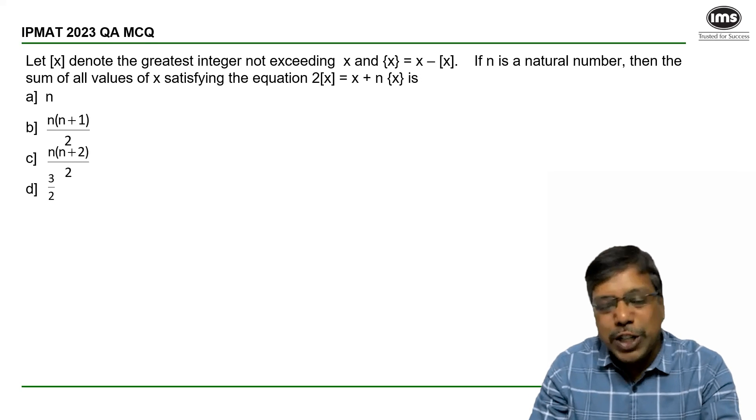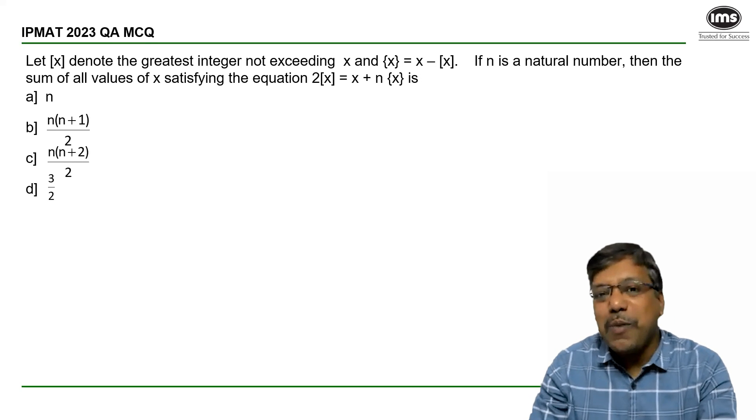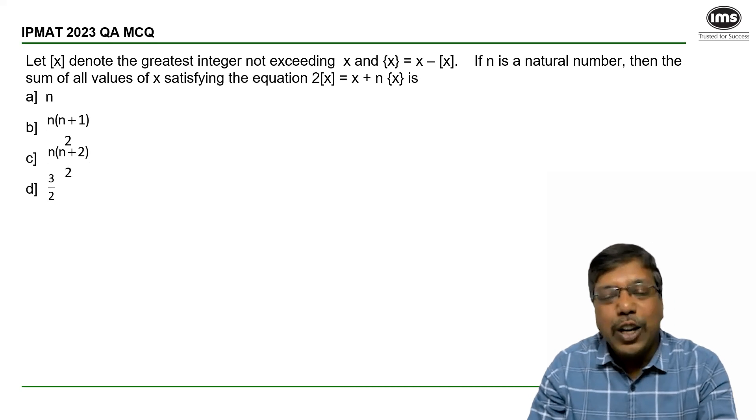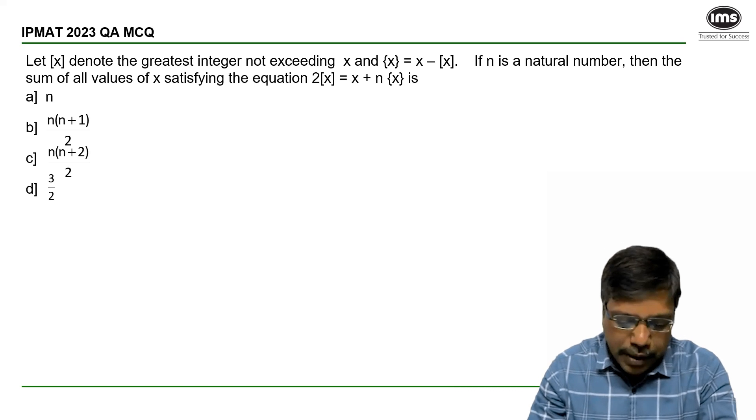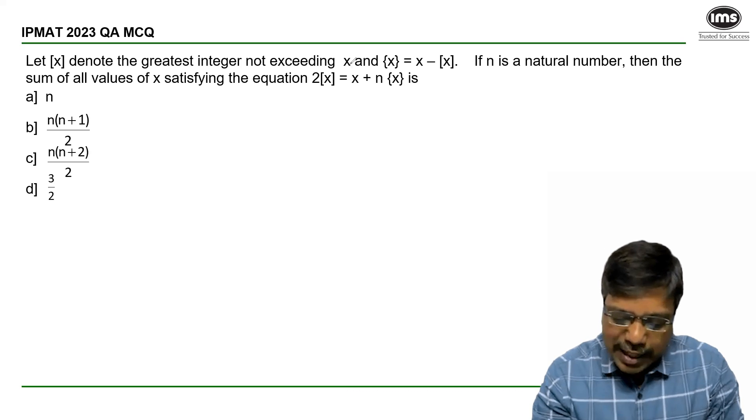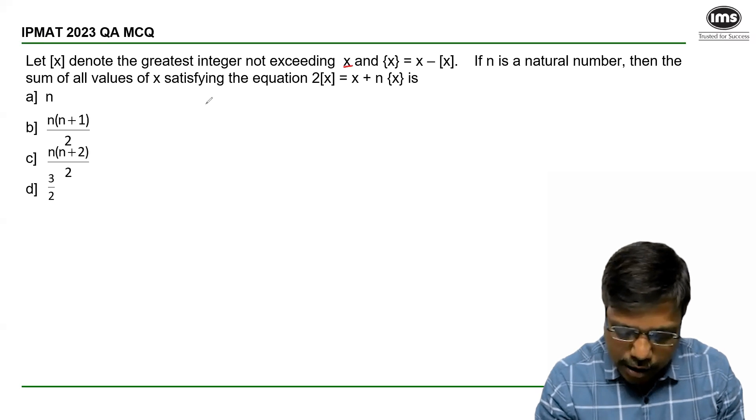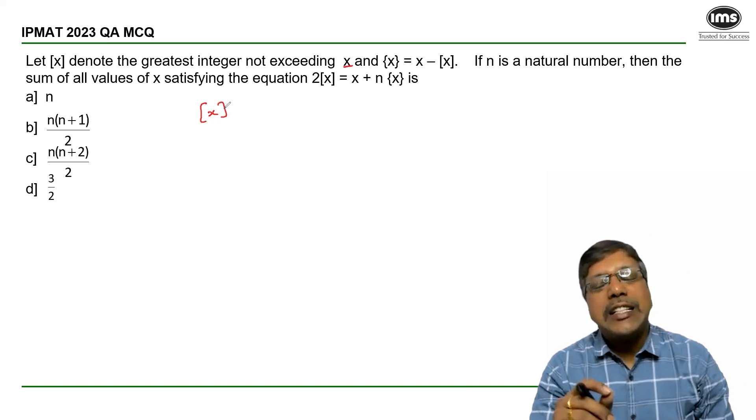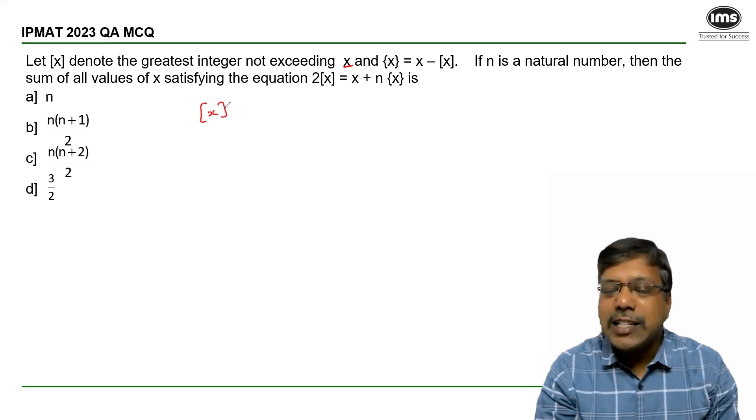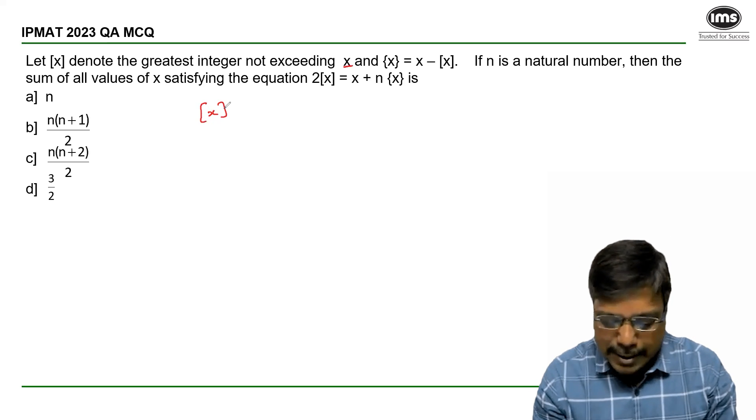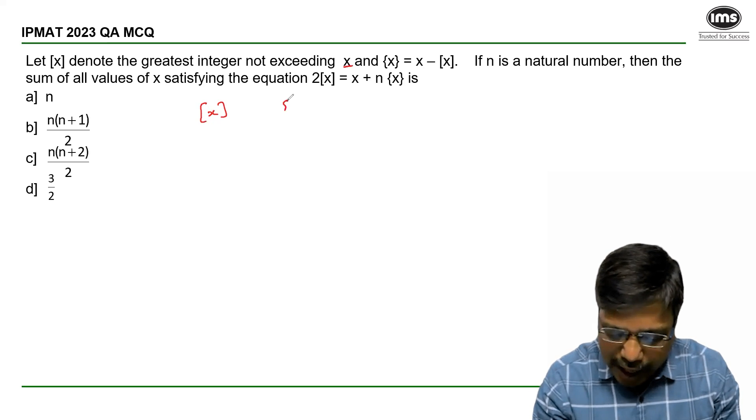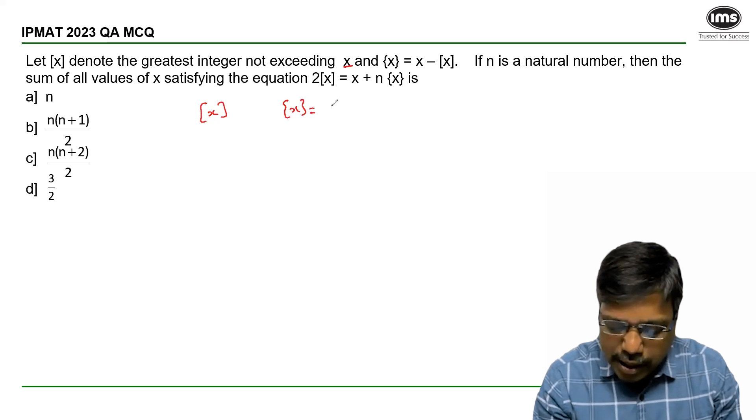Let's see how to answer this question that has appeared in IPMAT Indore 2023 QA MCQ section. Now x is an integer, and [x] in square brackets represents greatest integer less than or equal to x, and {x} in curly brackets represents the fractional part.